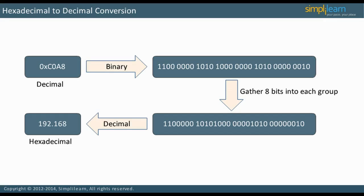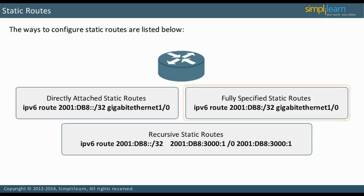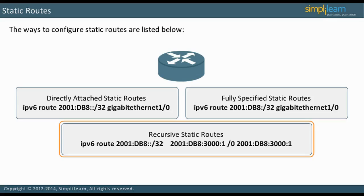Let us move on to Internet Protocol Version 6 in the following slide. In IPv6, there are three ways to configure static routes. With directly attached static routes, only the output interface is specified. Fully specified static routes are used when the output interface is multi-access; both the interface and next hop are configured — note that the interface comes before the next hop as compared with IPv4. In recursive static routes, only the next hop is specified. This example specifies that all destinations with address prefix 2001:DB8::/32 are reachable via the host with address 2001:DB8:3000:1.